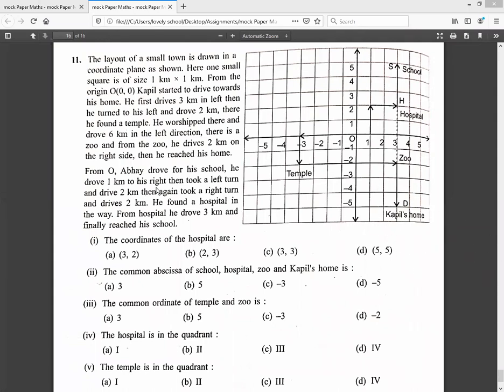From O, Kapil drove to his school. He drove one kilometer to the right, then took a left turn and drove two kilometers. He took a right turn and drove two kilometers where he found a hospital. From the hospital, he drove three kilometers and finally reached the school.